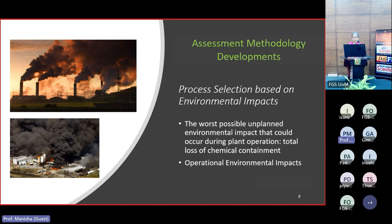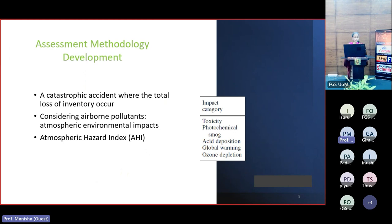In the initial development, we considered a catastrophic accident where a total loss of inventory occurs. We considered airborne pollutants and atmospheric environmental impacts, specifically five impacts: toxicity impact, photochemical smog impact, acid deposition impact, global warming impact, and ozone depletion impact. The toxicity impact is the impact on biological organisms because of the toxic properties of the chemicals.